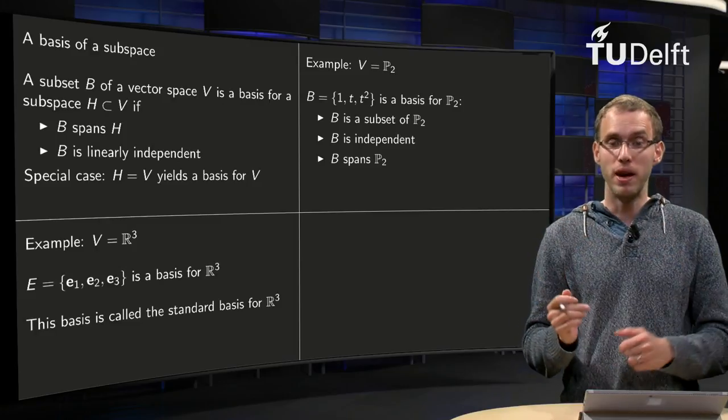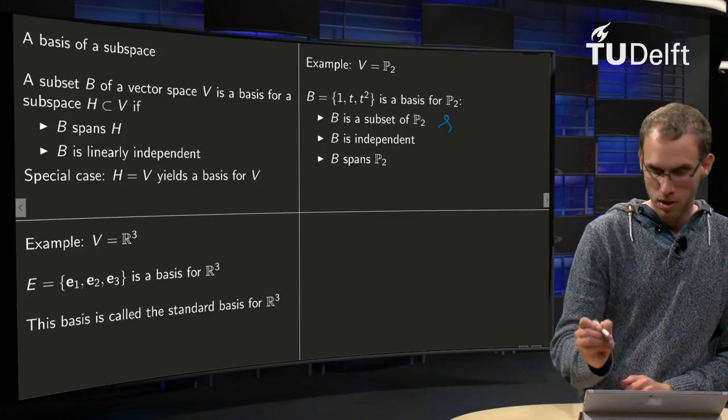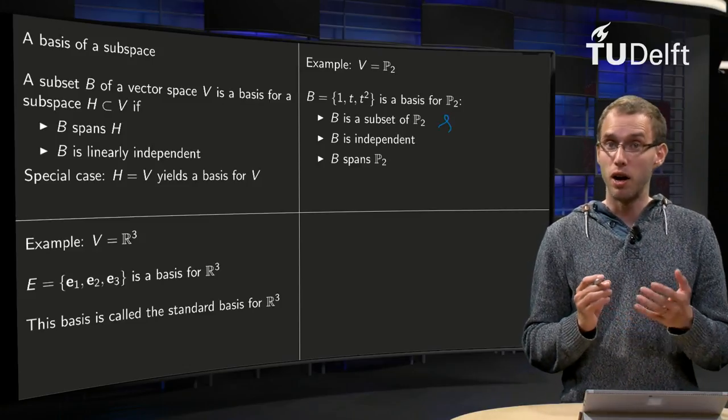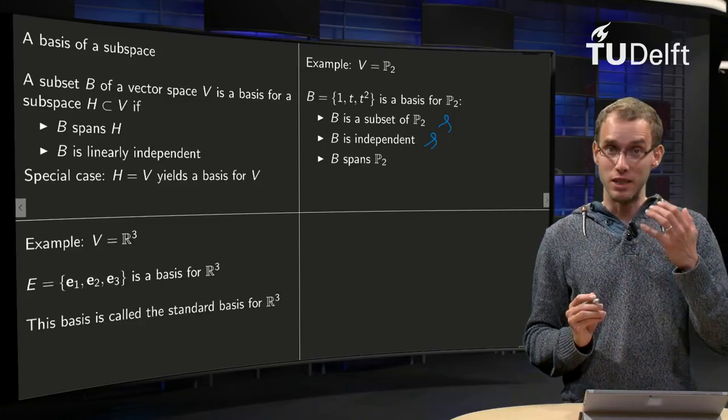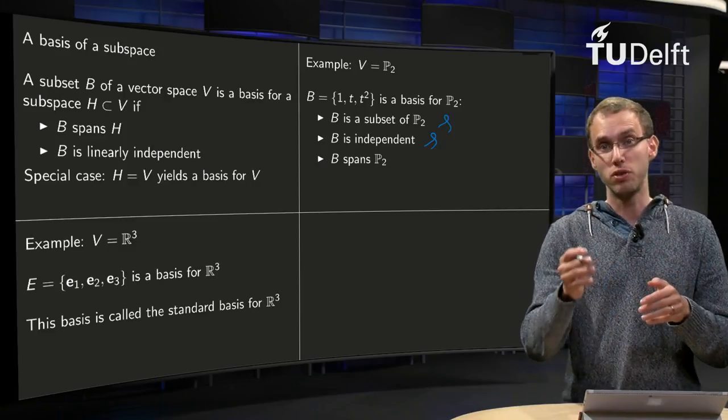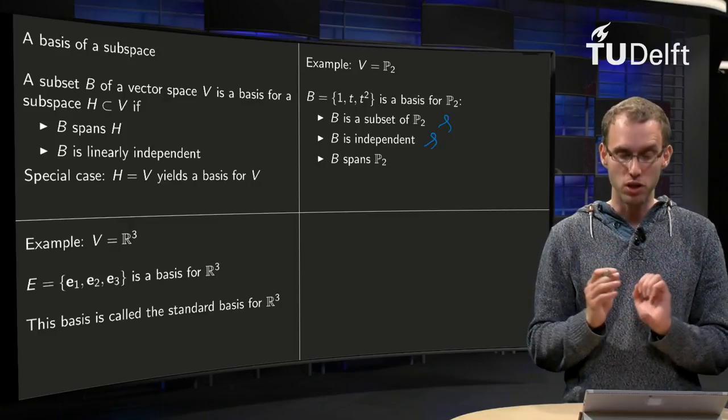We need three things. A subset—that is fine, 1, t, and t² are in P₂. Independence—that is also fine, because as we saw earlier on, the set {1, t, t², ..., tⁿ} is an independent set, so that part is ok.